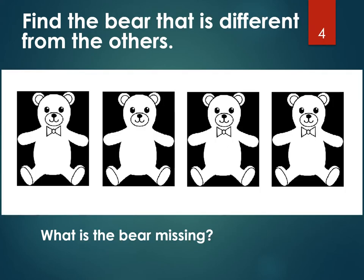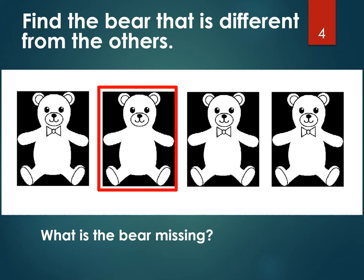Here's the next question. We have a different kind of pictures — it's a teddy bear. Find the bear that is different from the others. There's one teddy bear that's missing something. Look very carefully. Did you choose this bear? If you did, you are correct. What is the bear missing? He's missing his bow tie. Everybody else has a bow tie, but this one doesn't. Very good. Let's go to the next question.